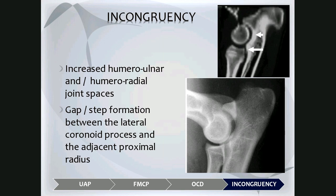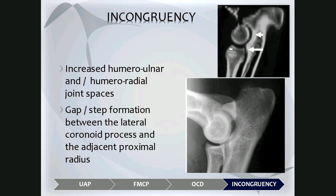Lastly, elbow incongruency can be due to increased humeral-ulnar or humeral-radial joint space, and often a gap or step formation is seen between the lateral coronoid process and the adjacent proximal radius. This radiograph demonstrates a widened trochlear notch, increased joint space between the humerus and radial head, and step formation between the lateral coronoid process and radial head. CT is very useful for these cases as it removes superimposition; it shows clear step formation between the ulna and radial head as well as widening of the trochlear notch.